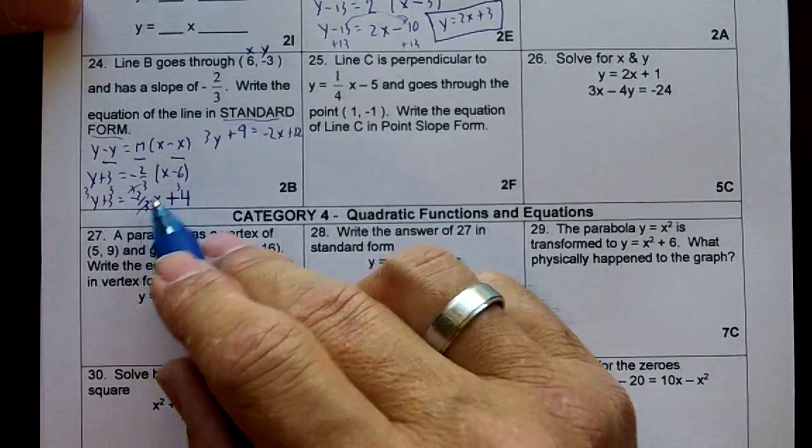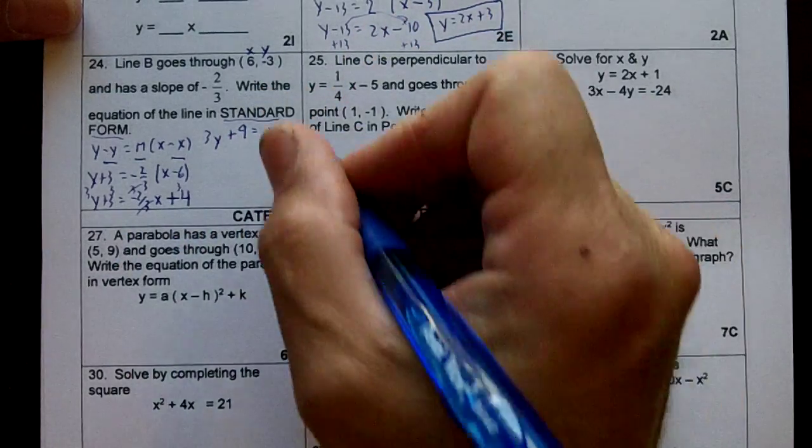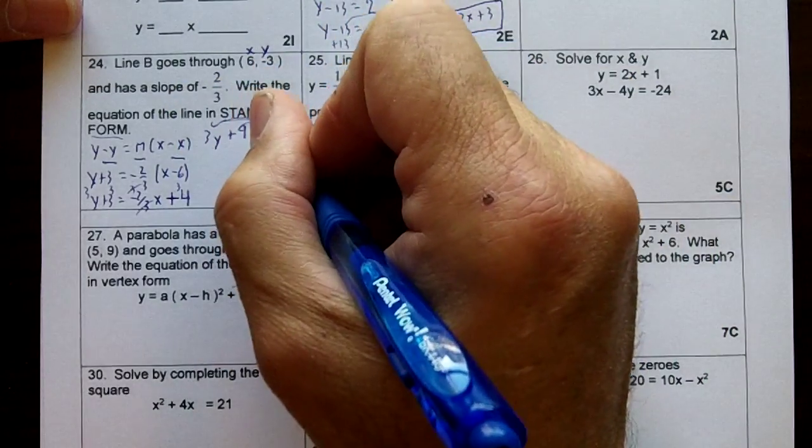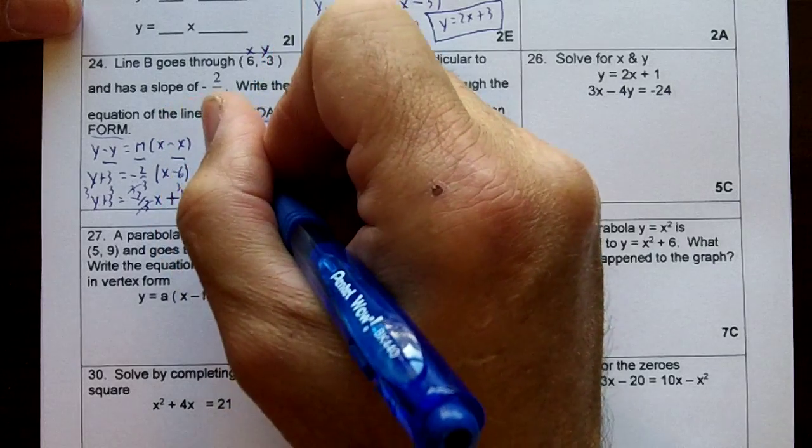Always try to get rid of the fractions first. It makes the equation a lot easier to do. Now then, I'm going to move the 2x over here and the 9 over here. So I'm going to add the 2x, and I'm going to subtract the 9.